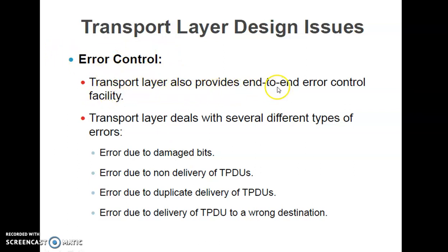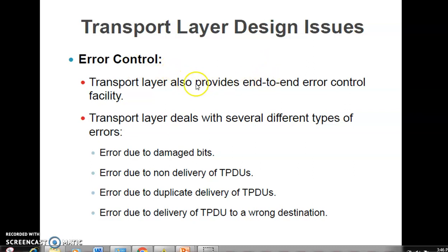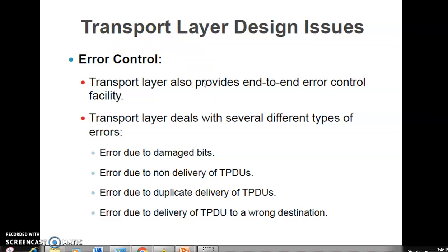The transport layer provides end-to-end error control. This function is repeated at the transport layer — the data link layer handles node-to-node error control, while the transport layer handles end-to-end error control. The transport layer deals with errors due to damaged bits, non-delivery of TPDUs, duplicate delivery of TPDUs, and delivery of TPDUs to the wrong destination.